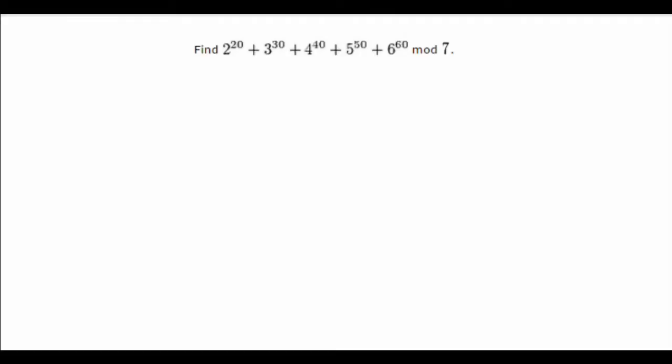So, to solve this problem, we will use a little theorem, literally a little theorem, called Fermat's Little Theorem. This states that a to the power of p is congruent to a mod p when p is a prime and a is relatively prime to p.